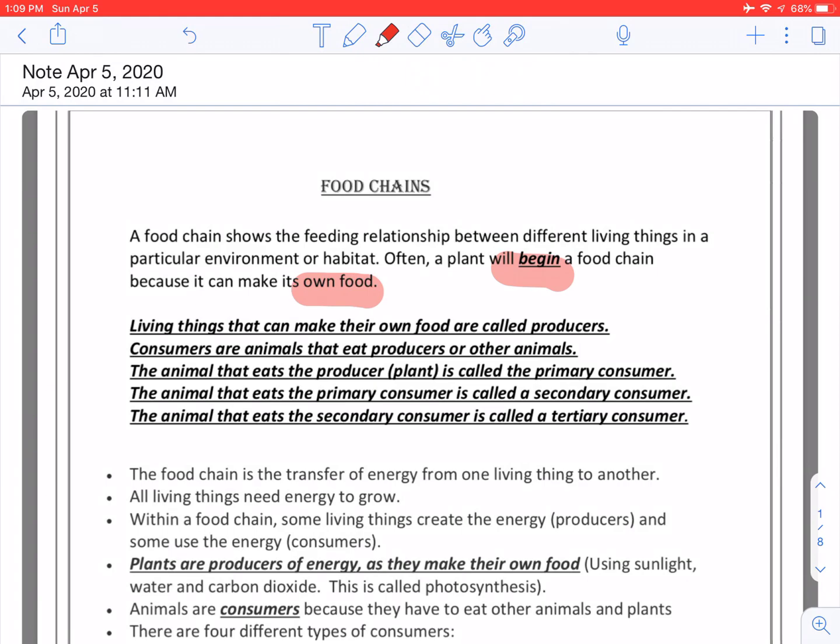Living things that can make their own food are called producers. Consumers are animals that eat producers or other animals. The animal that eats a producer or the plant is called the primary consumer. An animal that eats the primary consumer is called a secondary consumer, and an animal that eats a secondary consumer is called a tertiary consumer.